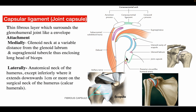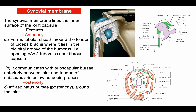As seen in the diagram, the fibrous capsule extends 1 to 1.5 cm downwards near the surgical neck of the humerus. The synovial membrane lines the inner surface of the joint capsule. Anteriorly, it forms a tubular sheath around the tendon of biceps brachii where it lies in the bicipital groove of the humerus — the opening between the two tubercles near the fibrous capsule.